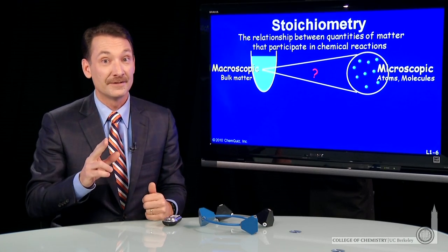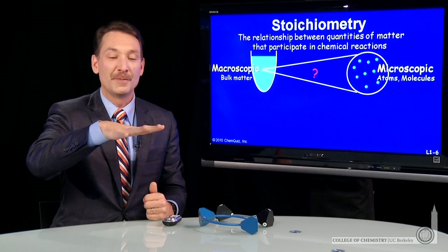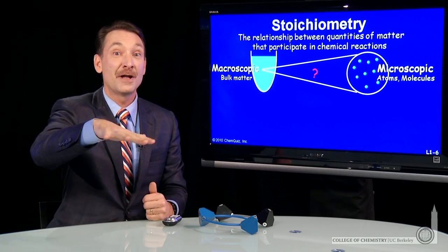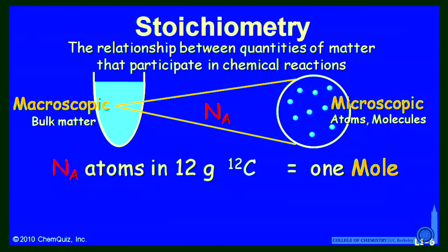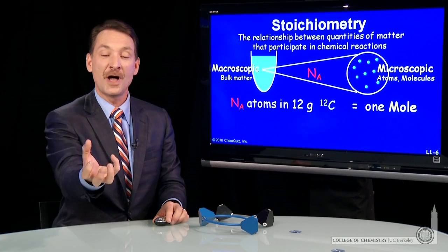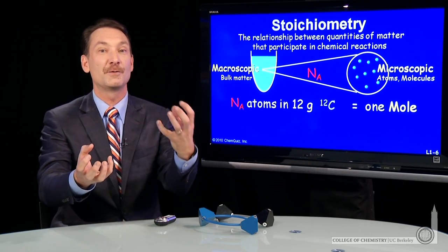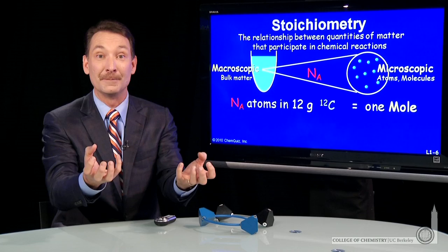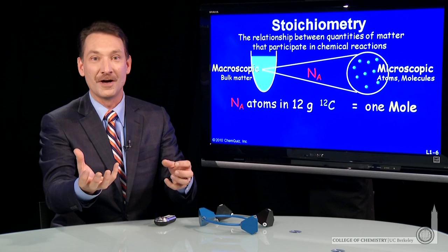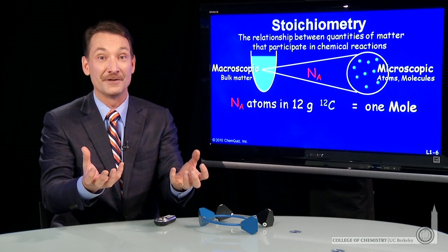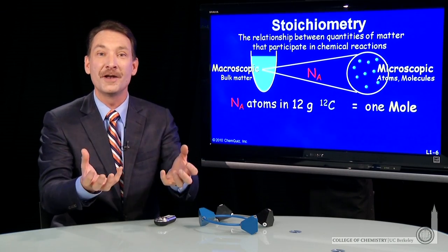We take one element to be the standard. Carbon will be the standard, and I'll measure all my relative masses relative to carbon-12. So I'll take 12 grams of carbon-12 to be my standard mass. Hydrogen weighs 1/12th what carbon weighs, so if I take 12 grams of carbon-12, I would react it with 1 gram of hydrogen atoms, and that would be a 1 to 1 ratio. Or 24 grams of carbon-12 with 2 grams of hydrogen would still have a 1 to 1 particle ratio.